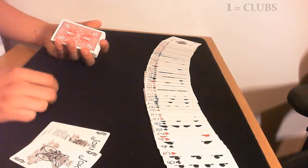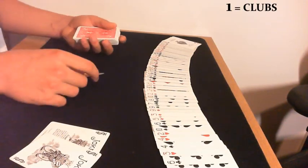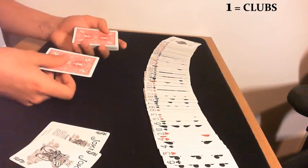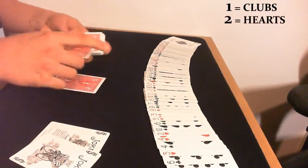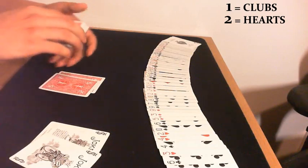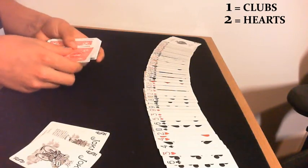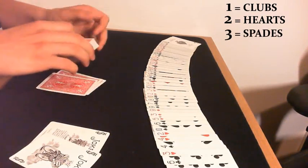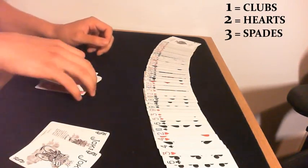So if you have chosen a club, just count a single card and put the rest of the deck on top. If you have chosen a heart, count two cards, put the rest of the deck on top. If you have chosen a spade, count three cards and put the rest of the deck on top just like so.